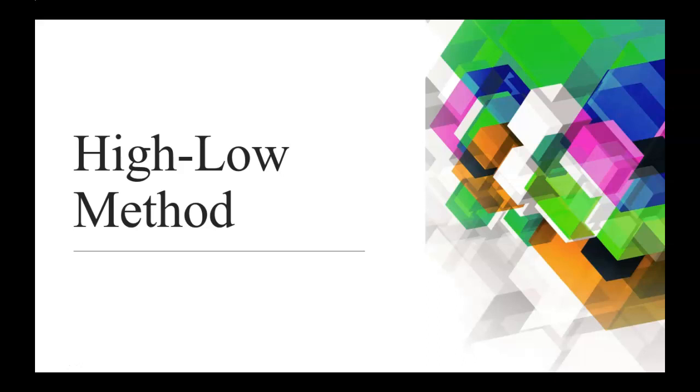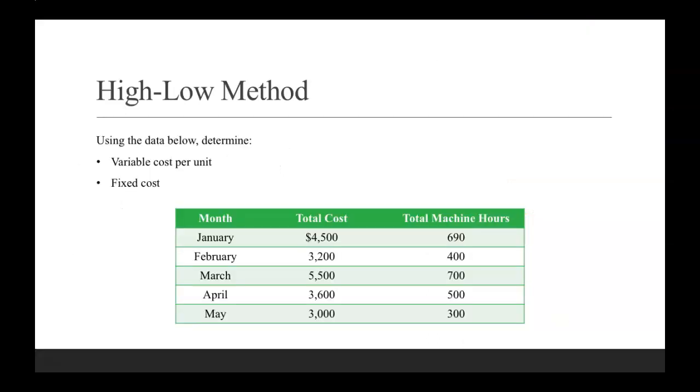Let's work through a high-low method example problem. This problem gives us some information for five different months.